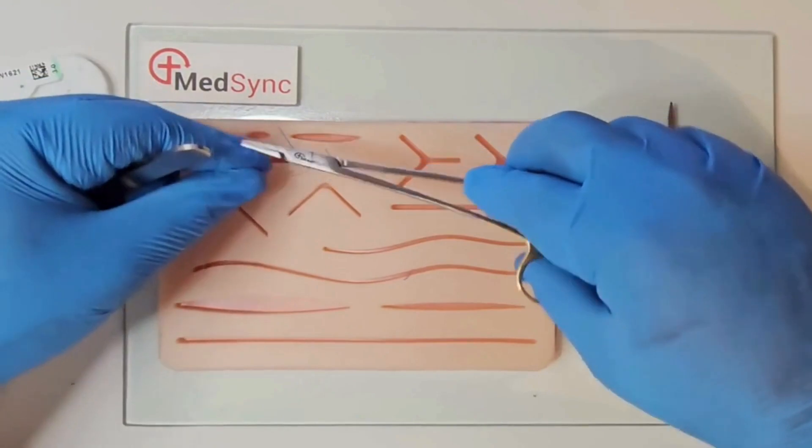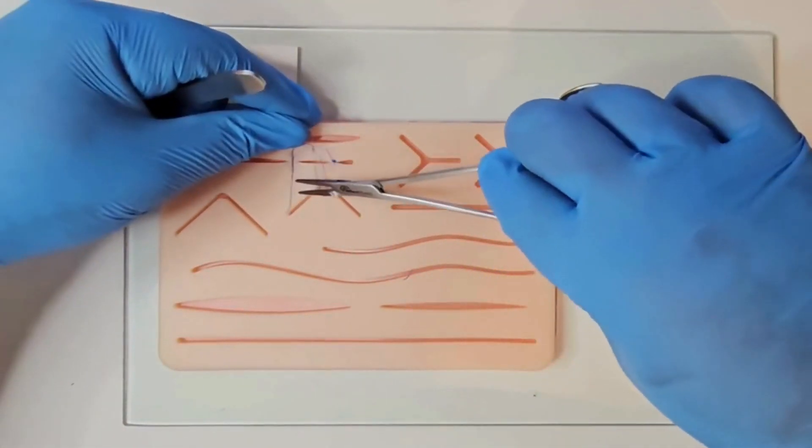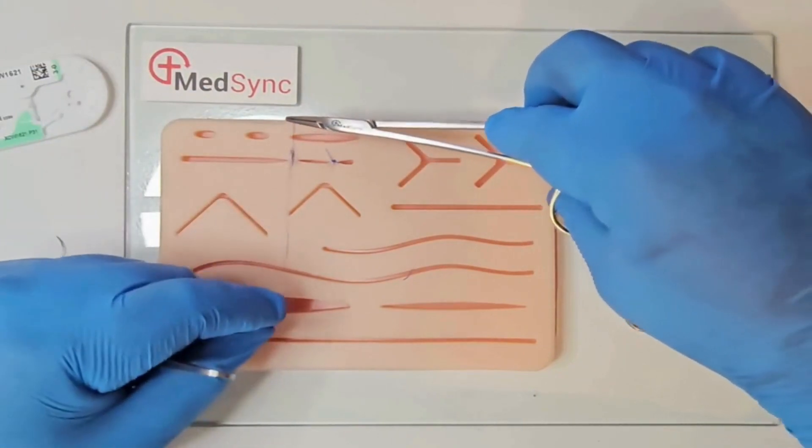Wrap the suture around the needle holder twice. Pull the short suture through. Repeat this maneuver twice more with a single revolution around the needle holder each time.